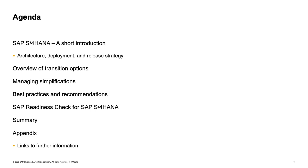Once we've covered that, we'll talk about the transition options you have to make your move to SAP S/4HANA. I will explain what simplifications are and how important they are to manage sufficiently. I will then conclude with a unit about best practices and recommendations gathered from many customer projects, cover the SAP Readiness Check for SAP S/4HANA, show how to use the results to optimize your project setup, and conclude with a summary.